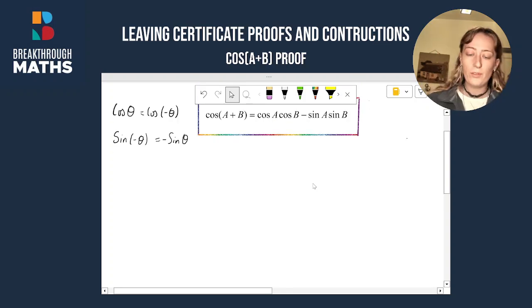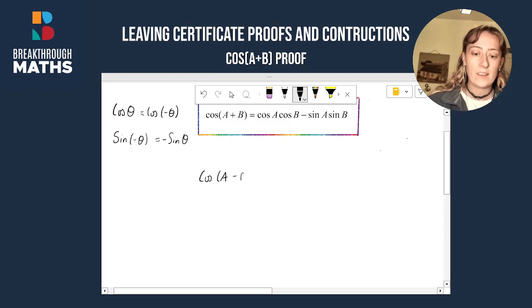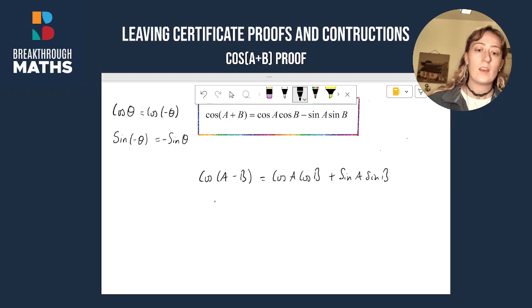So first step in this proof is to write down our formula straight from the log tables for cos of A minus B this time. And cos of A minus B is equal to cos A cos B plus sin A sin B.